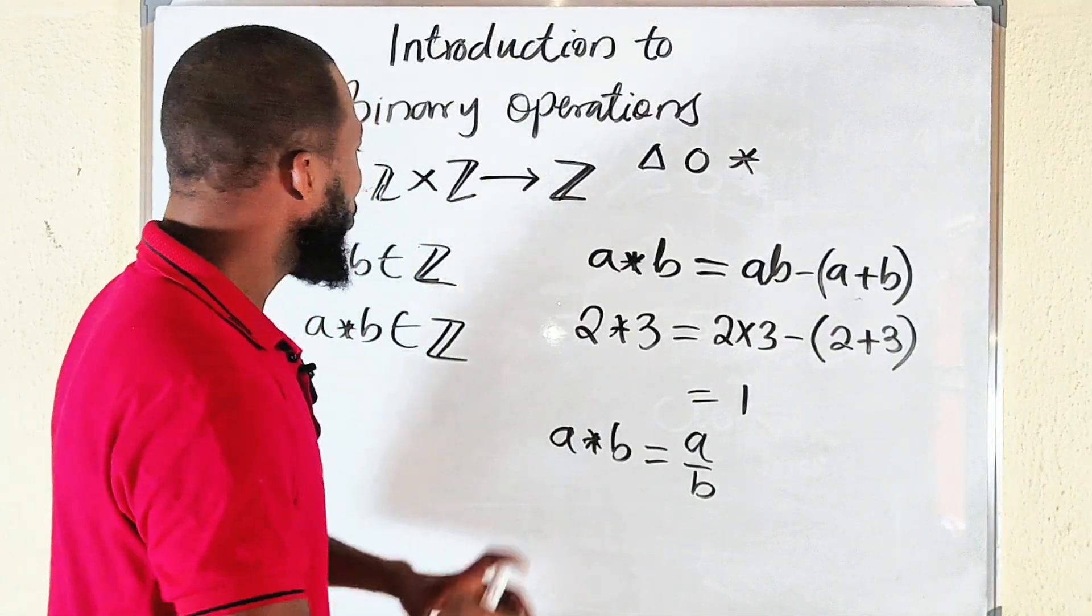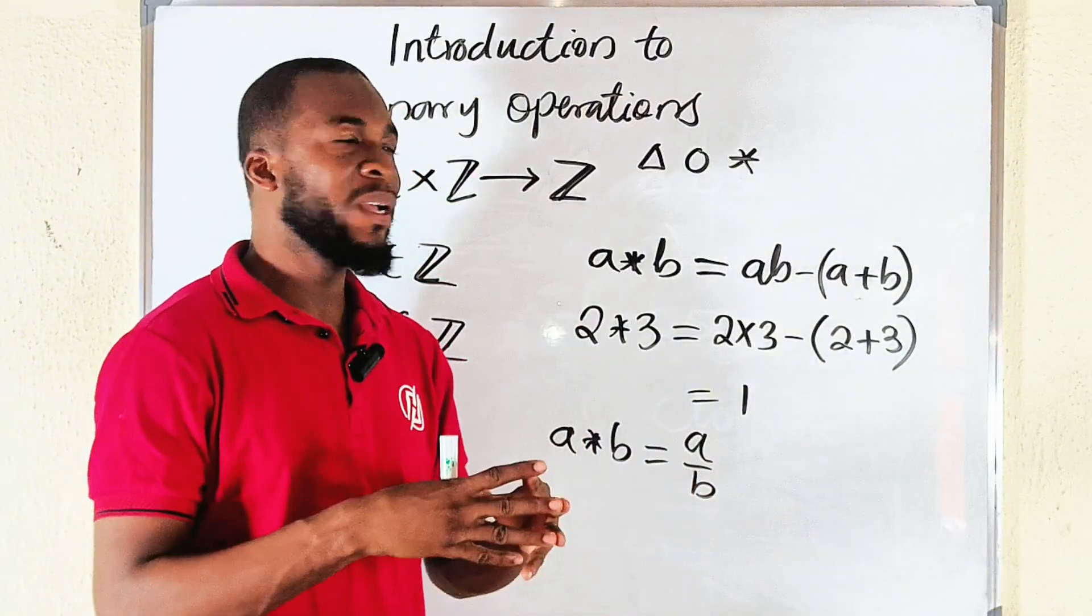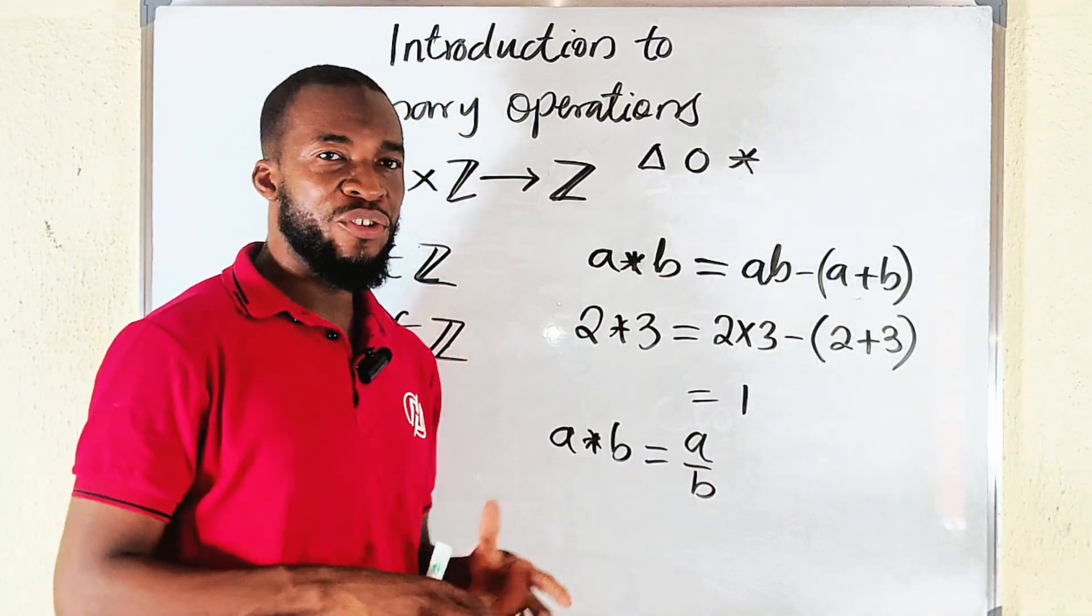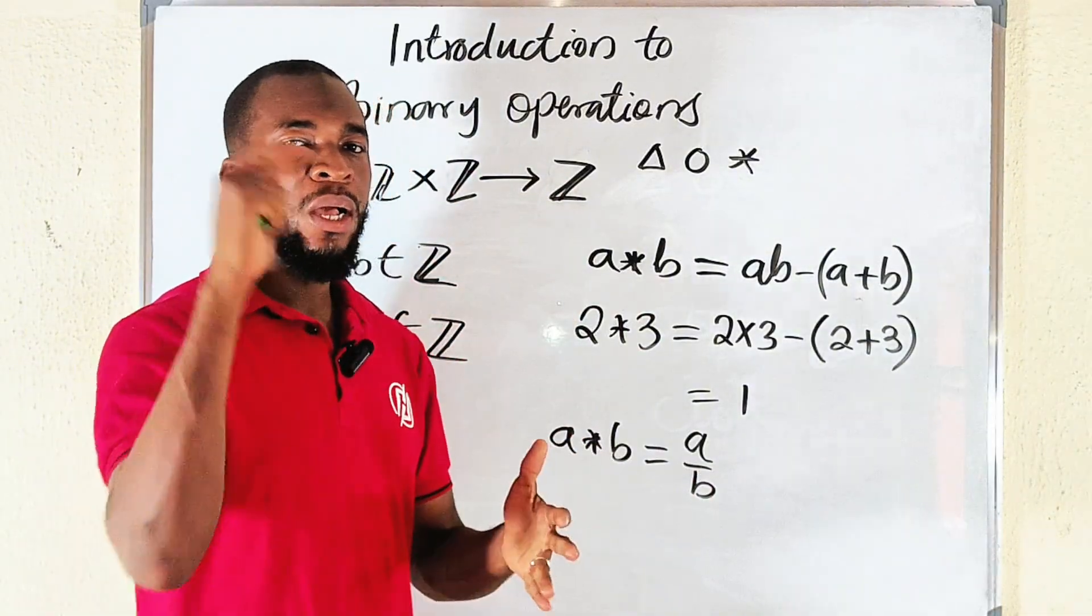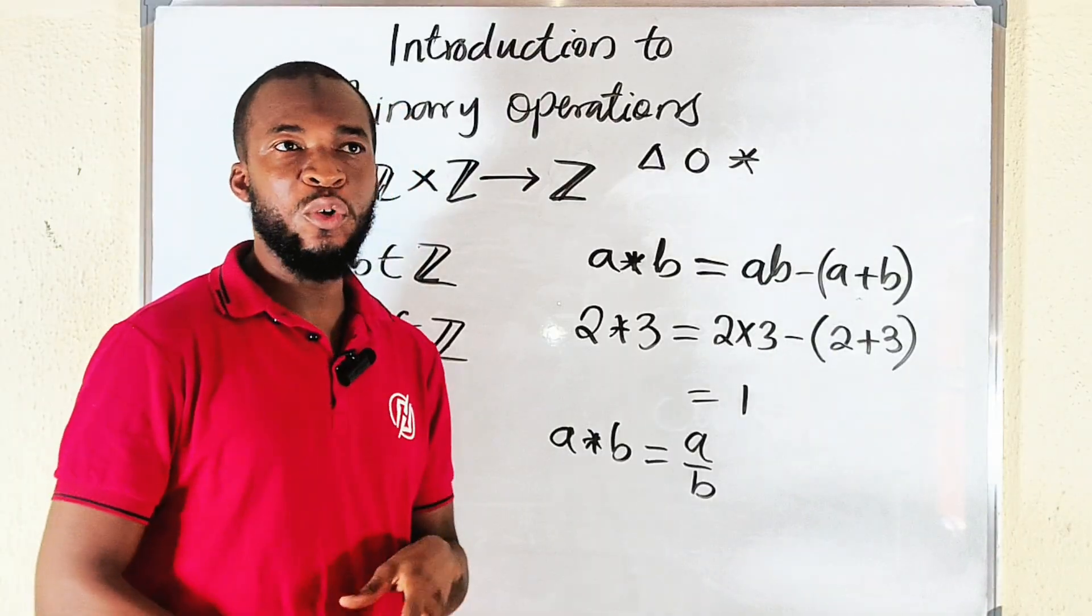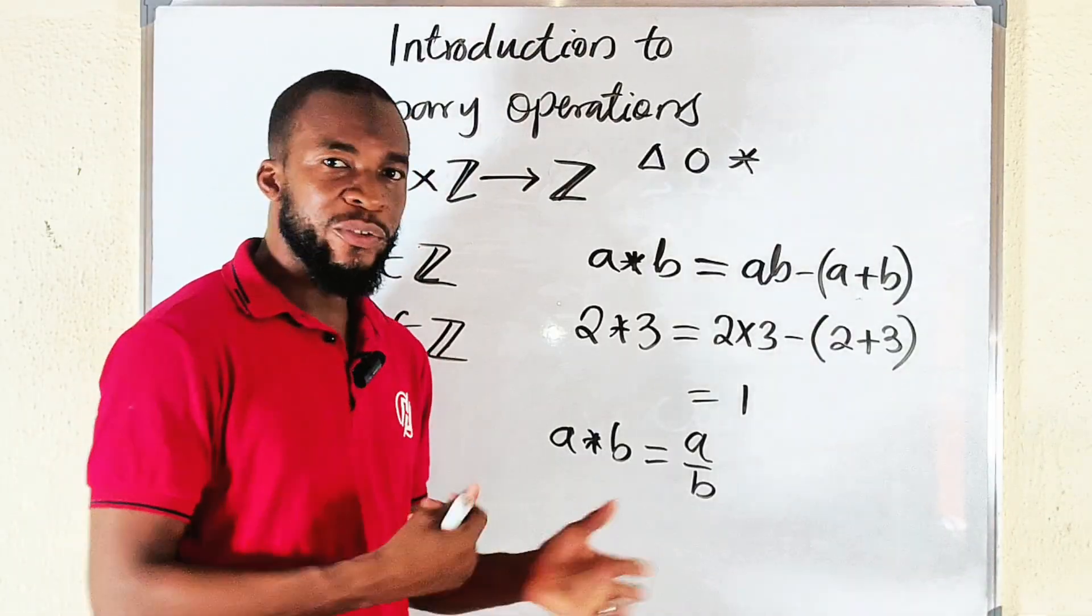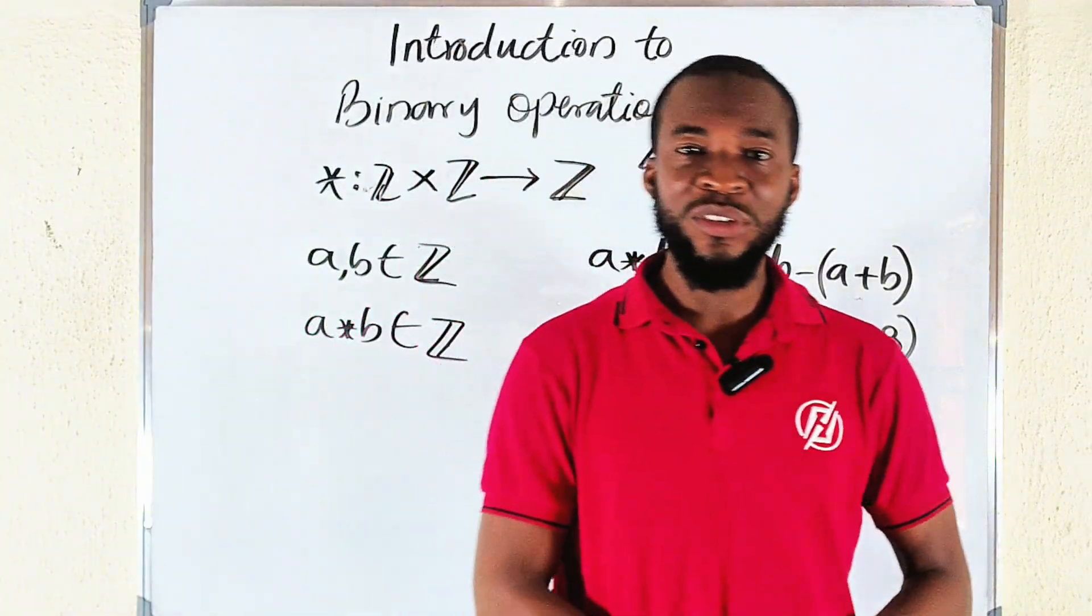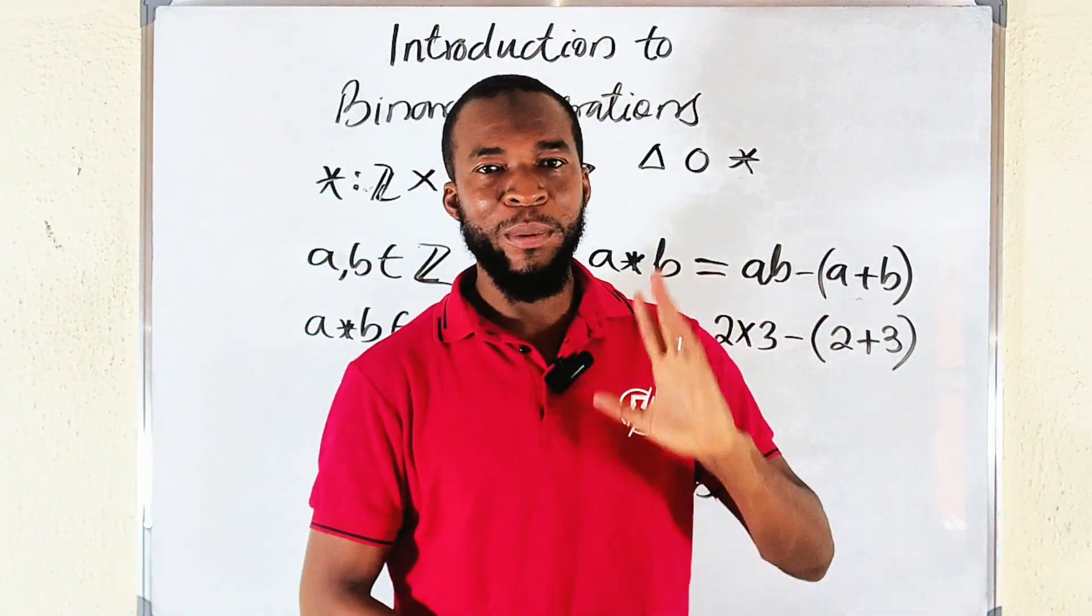So in our next meeting, we are going to look at the different properties of binary operations. We have closure property, we have associativity, we have commutativity, we have so many of them. Thank you for watching. Do share to your line and colleagues. Bye.